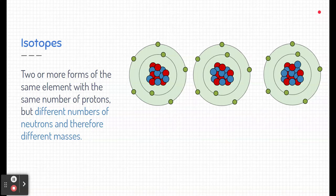Isotopes are two or more forms of the same element with the same number of protons, but different number of neutrons. And therefore they have different masses. So take a look here. I have three examples of an element. Now all of these are the same element.